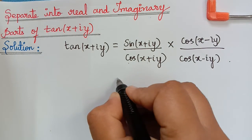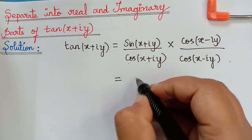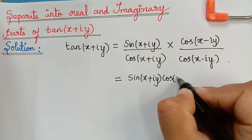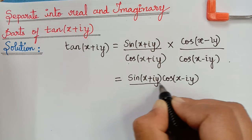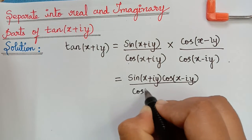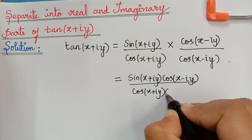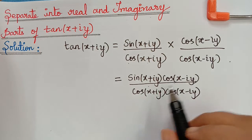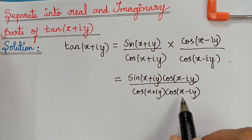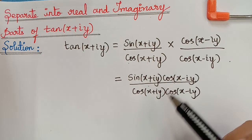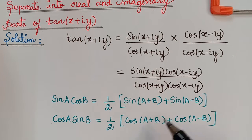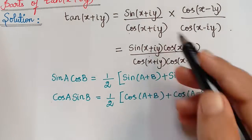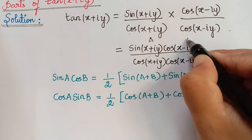We are going to use a trigonometric formula, so let us rewrite this. This can be written as sin(x + iy) · cos(x - iy) divided by cos(x + iy) · cos(x - iy). This is in the form sin(a)cos(b) in the numerator and cos(a)cos(b) in the denominator, and we will apply the corresponding trigonometric identities.